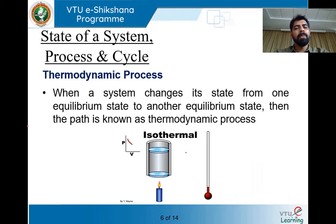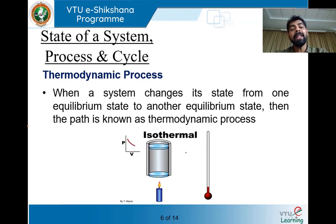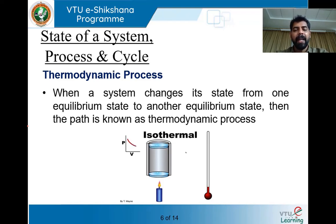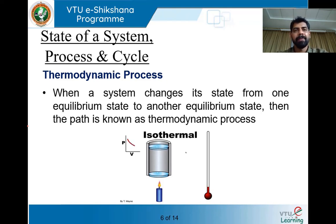When a system changes its state from one equilibrium state to another equilibrium state, the path it has taken is what we call a thermodynamic process. Consider a cylinder fitted with a piston being subjected to heat. Looking at a PV diagram — pressure versus volume — before heating, there is no change in temperature, so the system is at rest with all properties fixed.